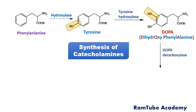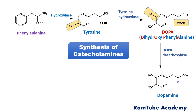Then DOPA, in the presence of DOPA decarboxylase, forms the first important catecholamine — dopamine. The name of the enzyme itself tells us that there is removal of the carboxyl group during the reaction. In dopamine, the carbon directly attached to the amine functionality is called the alpha carbon, and the next carbon is known as the beta carbon.